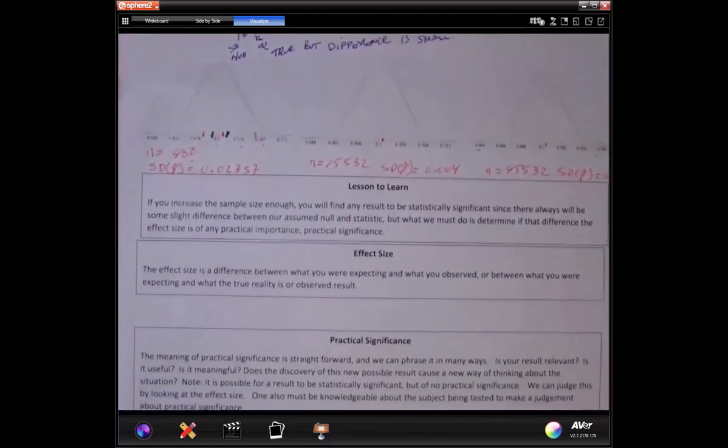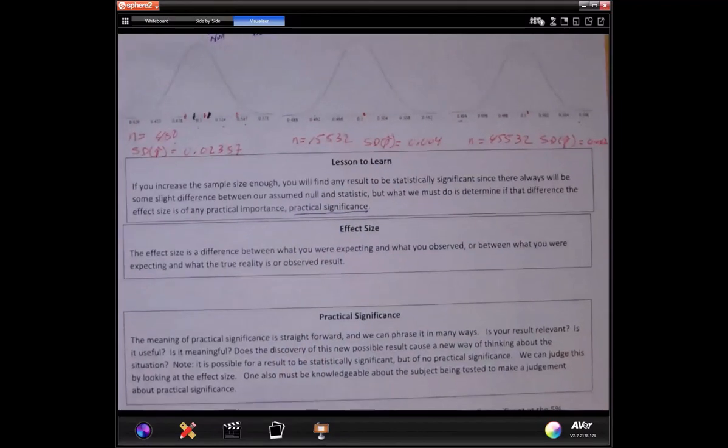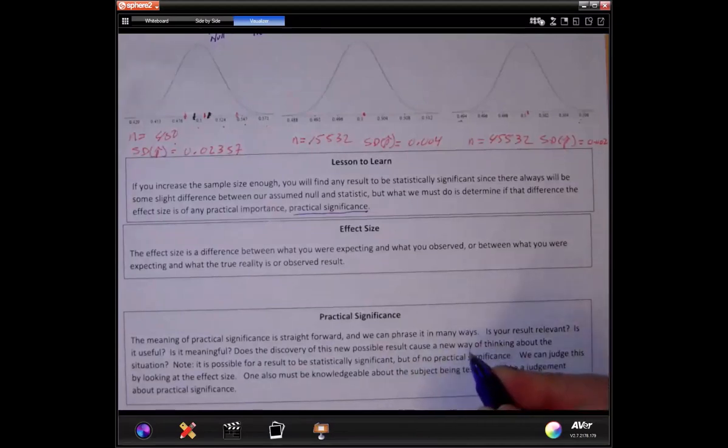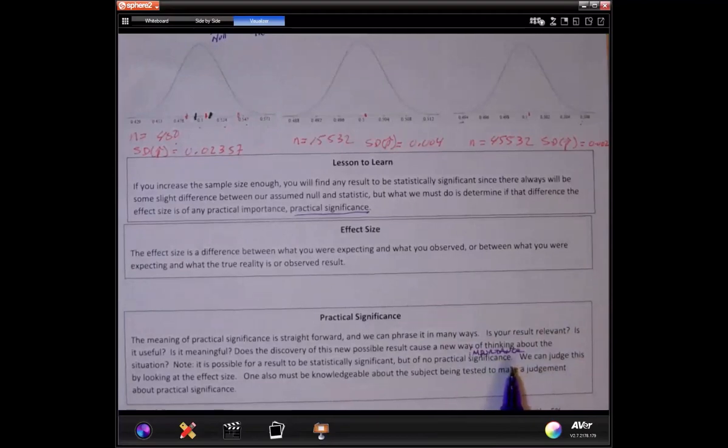Now, that brings us to the next thing, which is practical significance. What is practical significance? It just means the meaning of practical significance is straightforward, and we can phrase it in many ways. Is your result relevant? Is it useful? Is it meaningful? Does the discovery of this new possible result cause any way of thinking about the situation? It is possible for a result to be statistically significant, but of no practical significance or importance. So you'll see either word, sometimes, practical significance or practical importance.